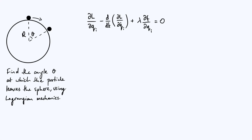Let's be clear about what the various terms in this equation actually are in this particular case. I'm going to define my vector of generalized coordinates q to be r and theta, where r and theta are the standard polar coordinates. I'm putting the origin of my coordinate system at the center of the sphere, so r is just the distance from the center of the sphere, and theta is the angle as defined in the diagram.